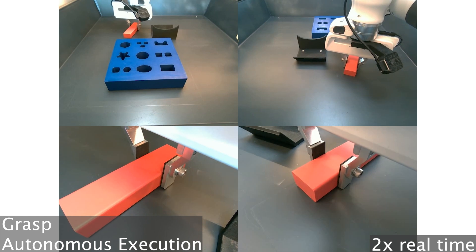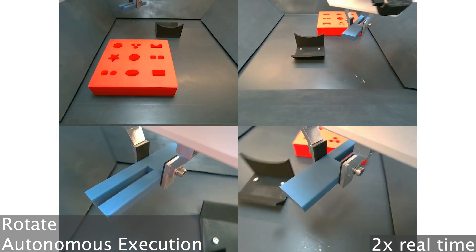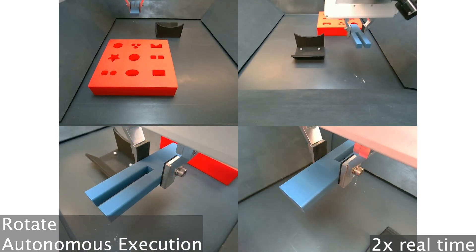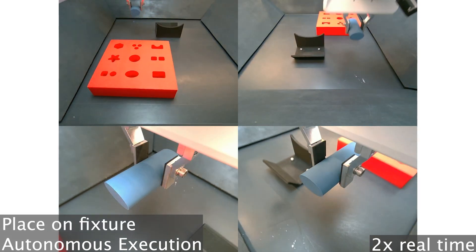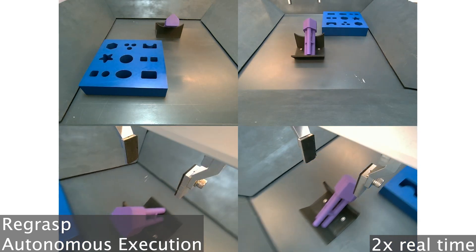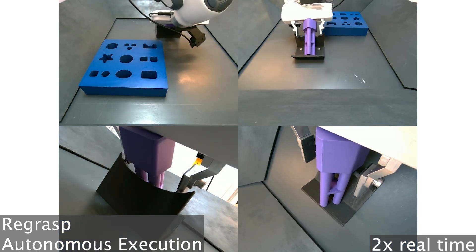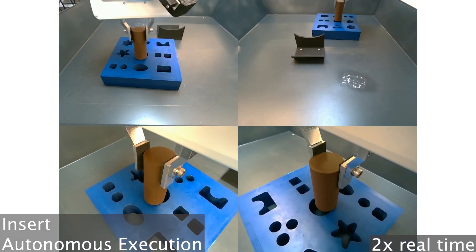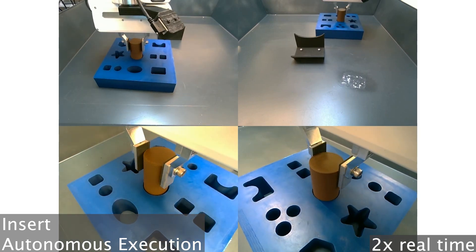Next, we trained and extensively evaluated a set of imitation learning policies with ResNet plus MLP, Transformer, and Diffusion architectures. We provide a baseline success rate for individual skills including grasp, rotate, place, regrasp, and insert.